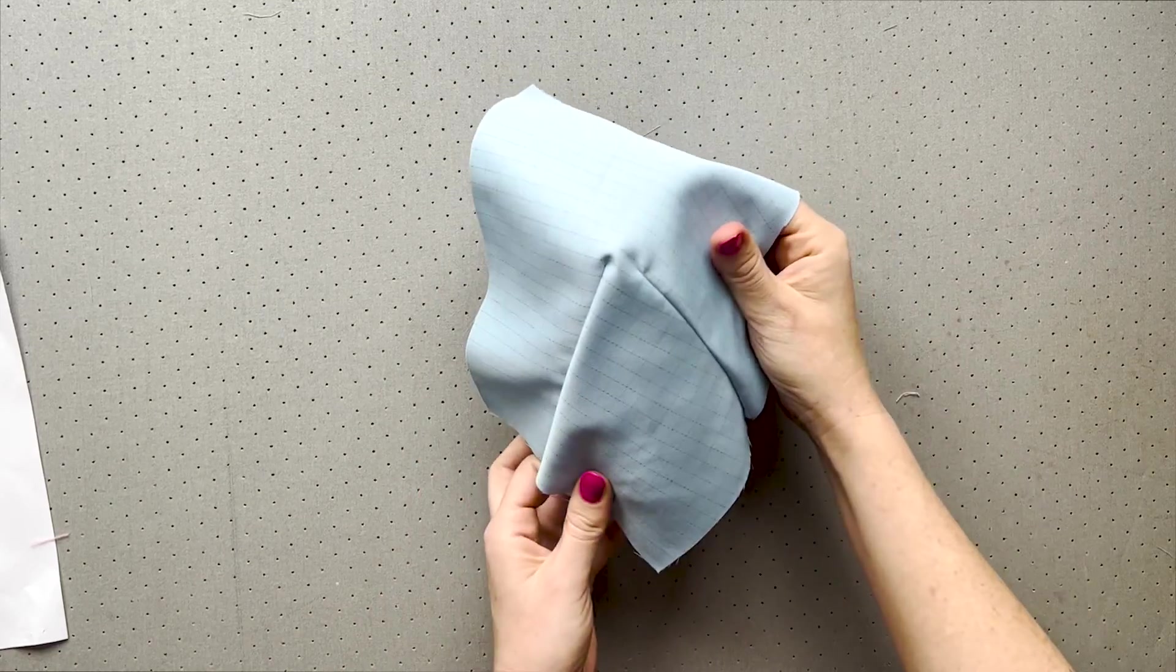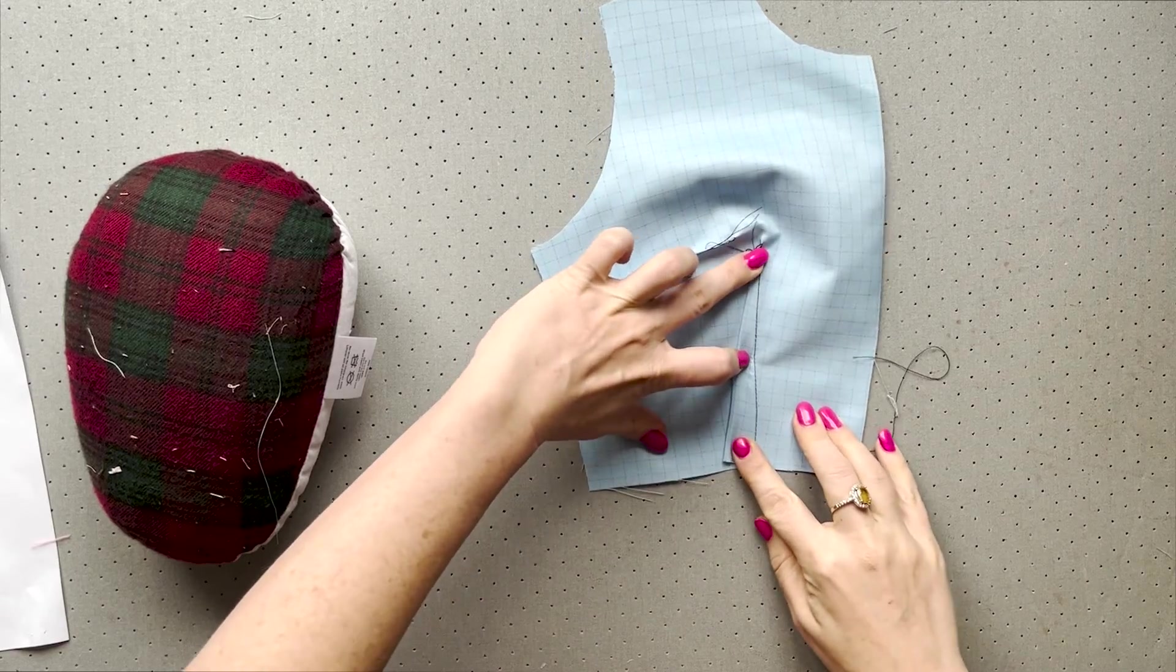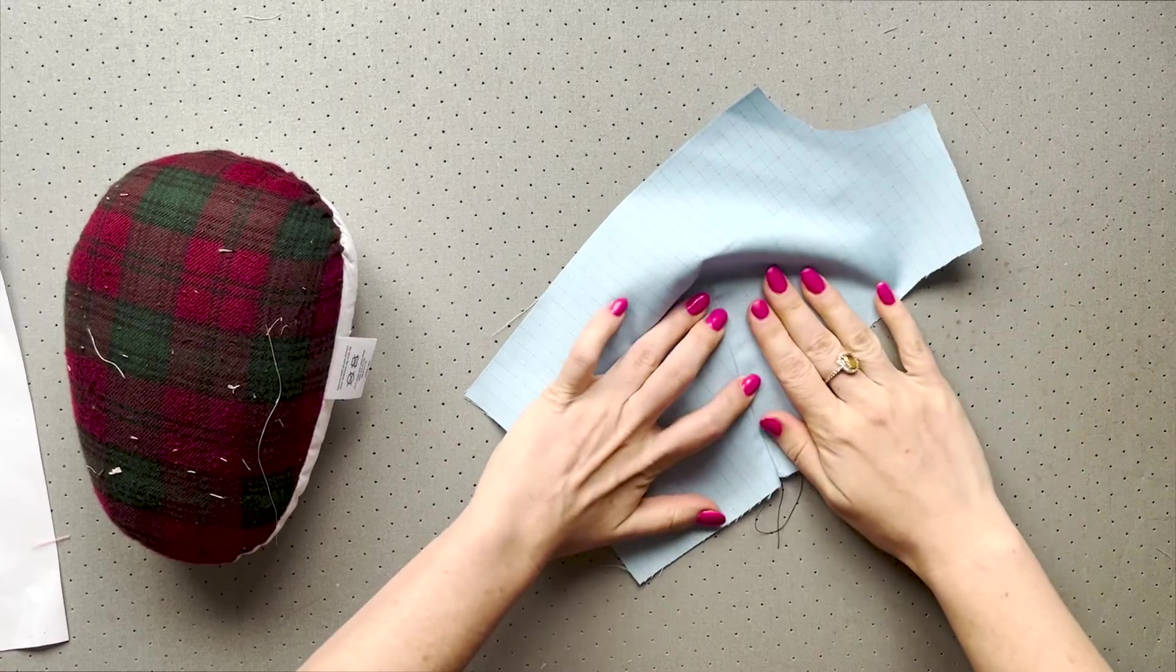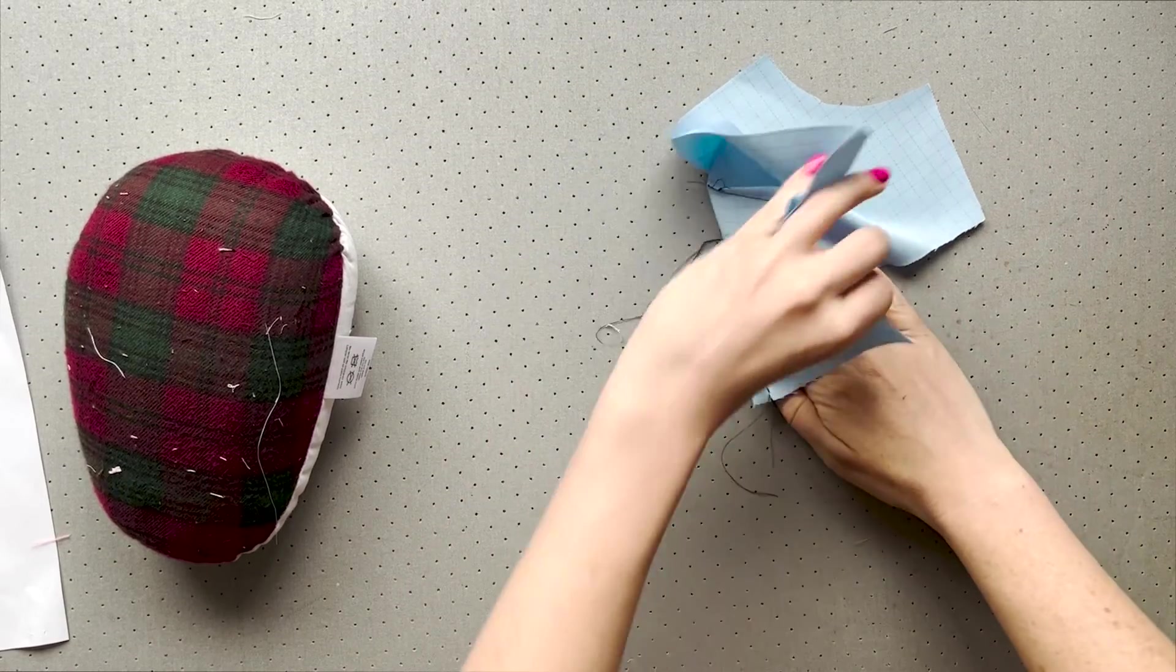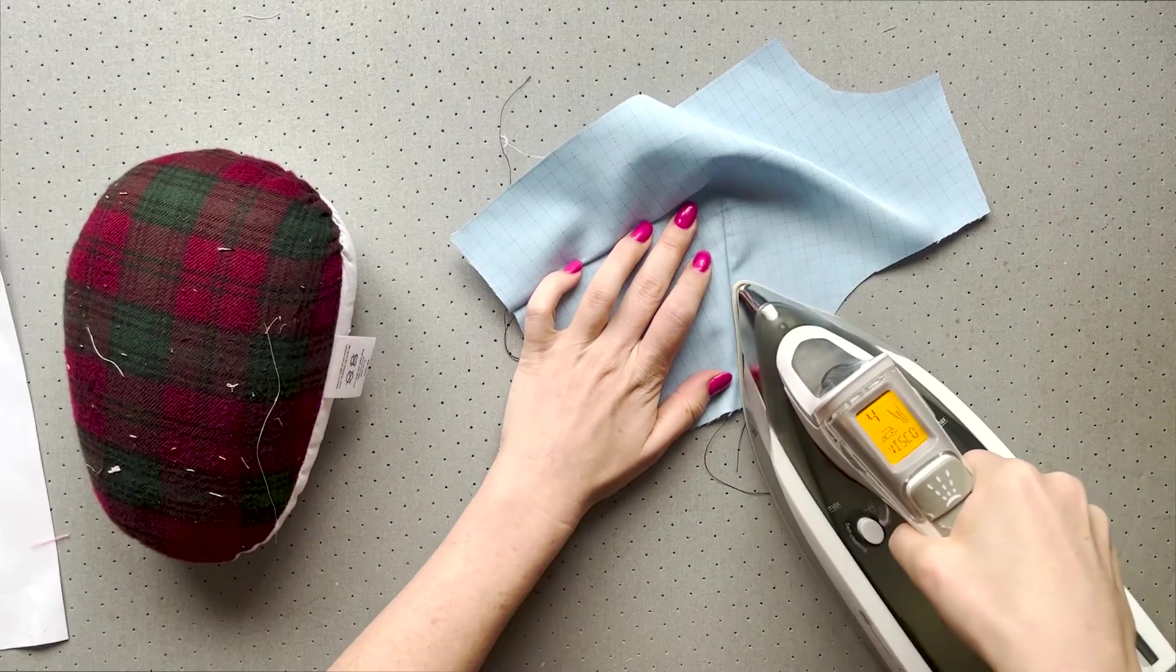The next important step when it comes to darts is pressing. Place it on your ironing board right side down or you may need to use a pressing ham to find a matching curve. Look at your pattern to see which direction to press the triangle and press it.